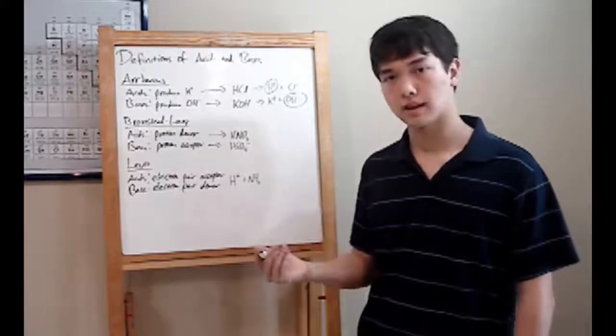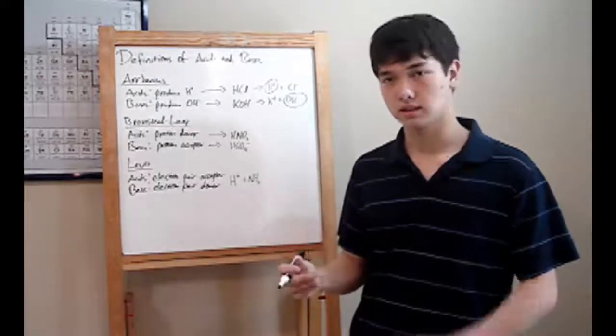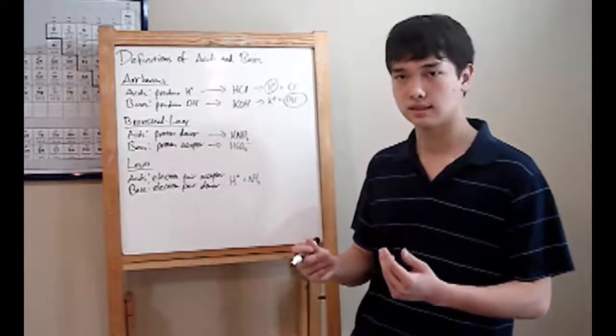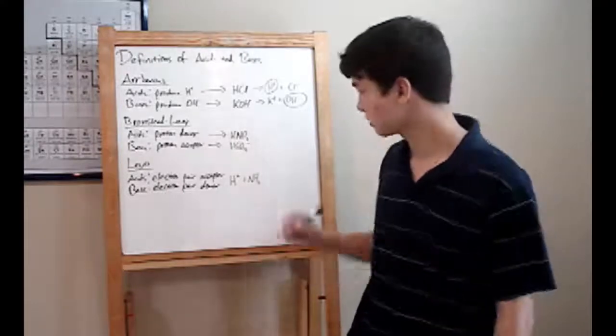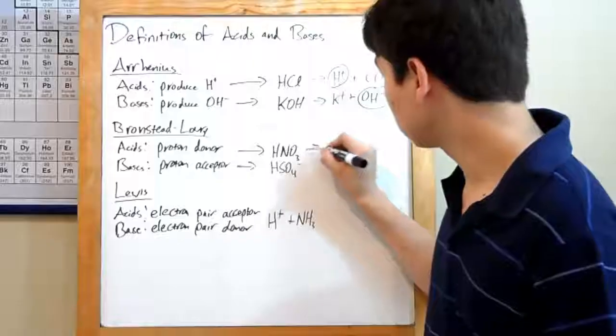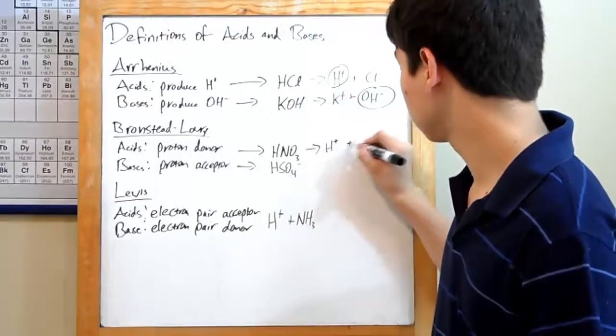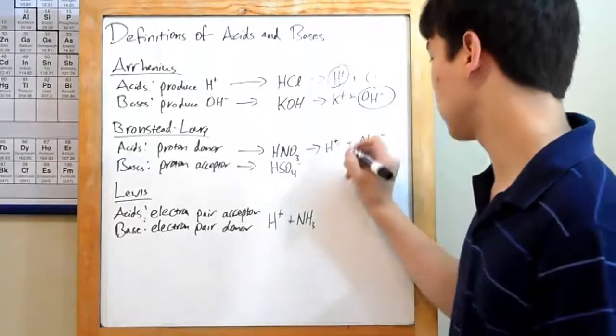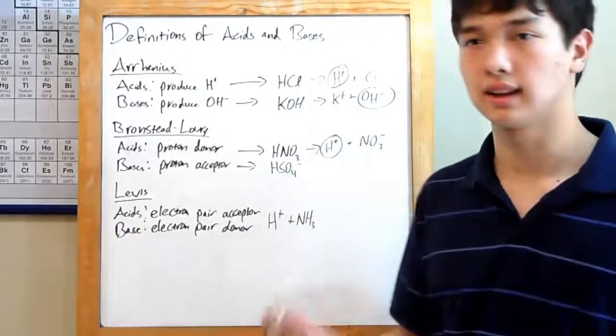An H plus ion is, if you think about it, just a proton, since H is a proton and an electron, and H plus is just without the electron. An example of this would be nitric acid, which dissociates to produce H plus and NO3 minus. Since it produced H plus, a proton, it's considered an acid.